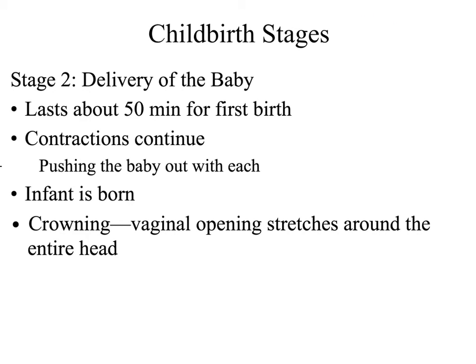In the second stage, we have the delivery of the baby. This lasts about 50 minutes for the first birth and about 20 to 30 minutes for the second and subsequent births. The contractions continue and are helpful with pushing the baby out. They have an essential value in keeping the child alert and in their ability to go extended periods without oxygen. The crowning is where the vaginal opening stretches around the entire head, and is seen as a milestone — some argue it's downhill from there.